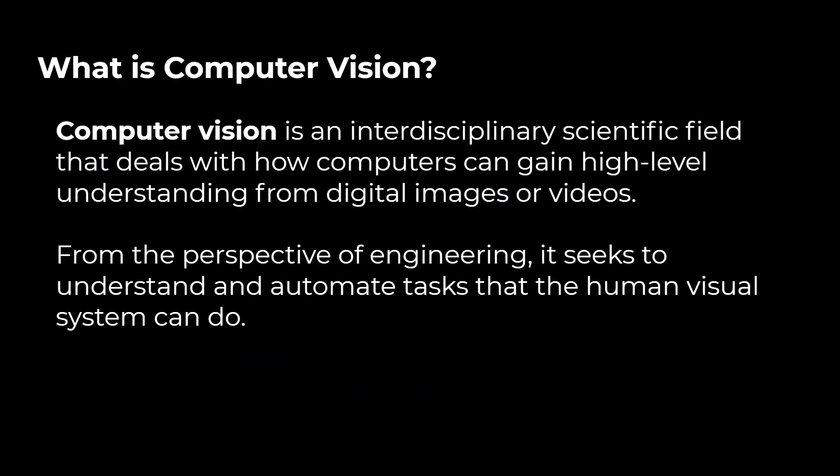To get started, we need to define what computer vision is. From Wikipedia: computer vision is an interdisciplinary scientific field that deals with how computers can gain high-level understanding from digital images or videos. In other words, it seeks to understand and automate tasks that the human visual system can do — essentially creating software that can mimic how we understand images.